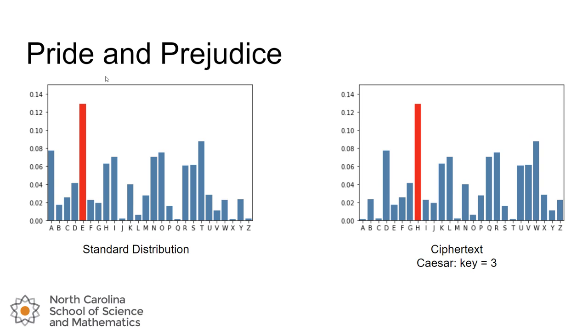I've highlighted corresponding bars from the standard distribution. We can find the corresponding bar in the ciphertext and that is mapped to H. We can see the relationship is that those letters are 3 apart.